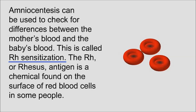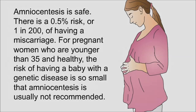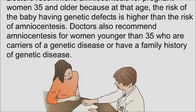Amniocentesis can also be used to check for differences between the mother's blood and the baby's blood, called Rh sensitization. The Rh antigen is a chemical found on the surface of red blood cells in some people. Amniocentesis carries a 0.5% risk — or 1 in 200 — of miscarriage. For women younger than 35 and healthy, the risk of a genetic disease is so small that amniocentesis is usually not recommended. Doctors recommend it for women 35 and older, or for younger women who are carriers of or have a family history of genetic disease.